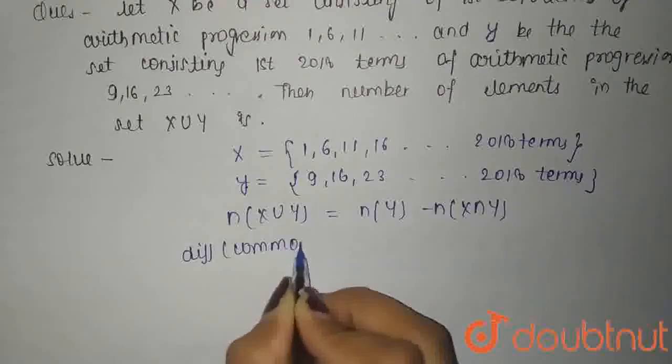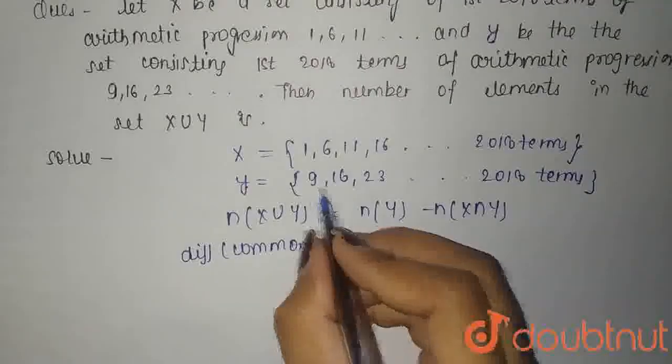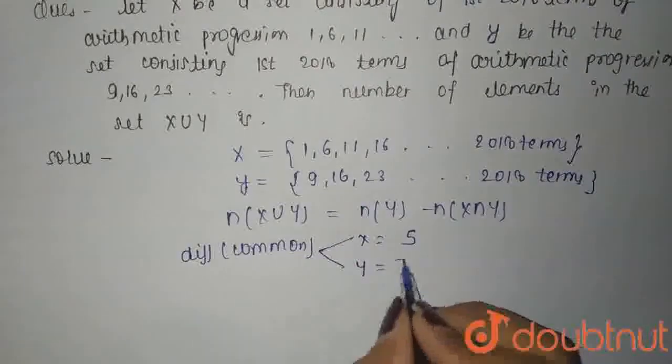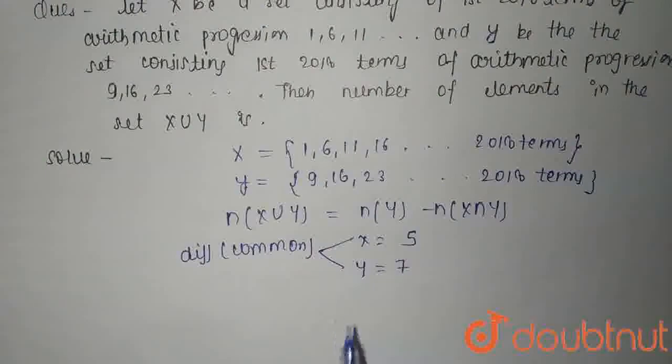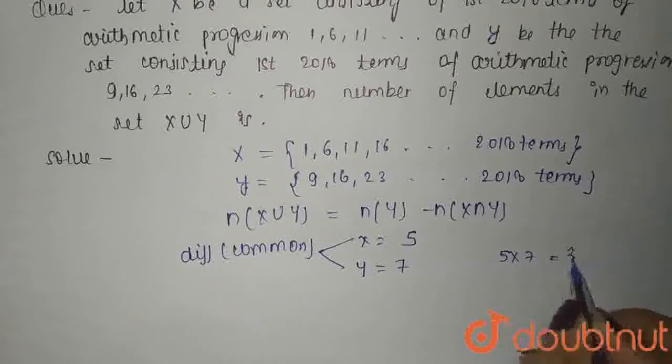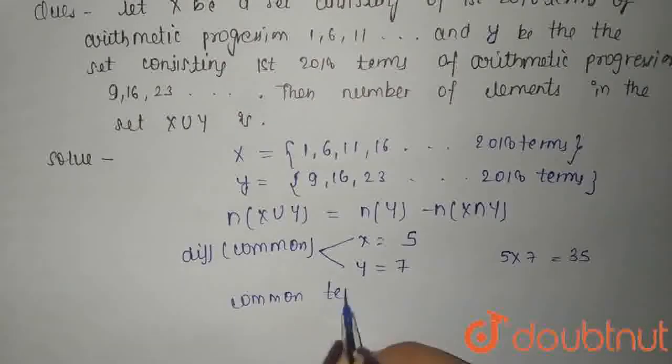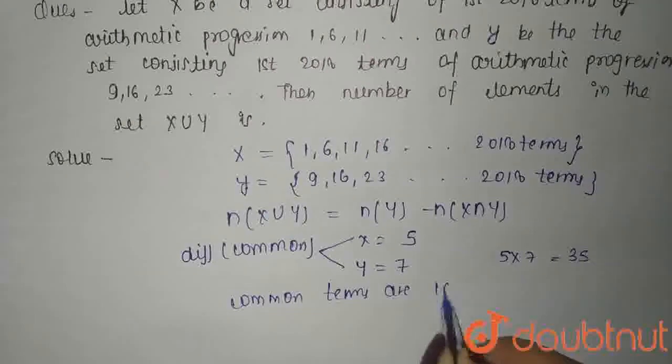And Y is 16 minus 9, 23 minus 16, which is 7. So the common difference of the AP of common terms is 5 times 7, that is 35.